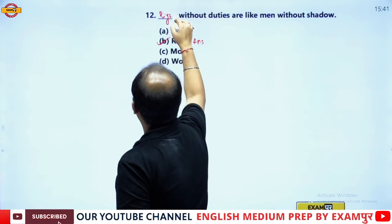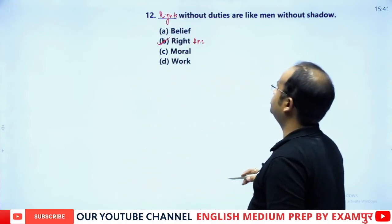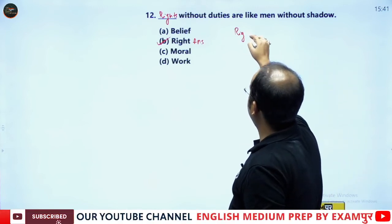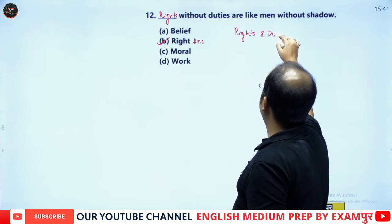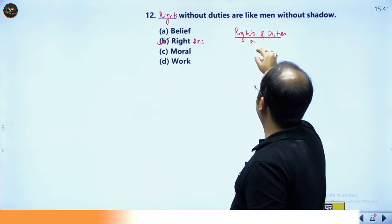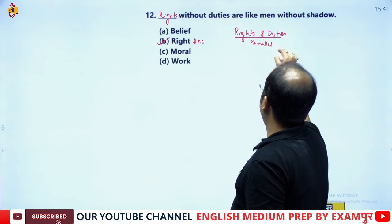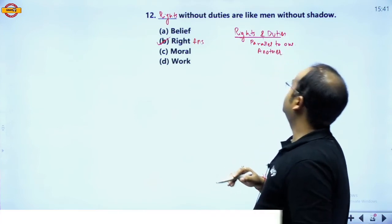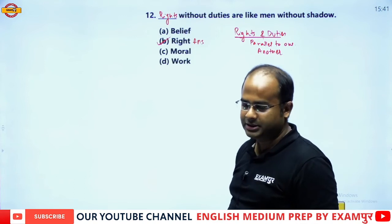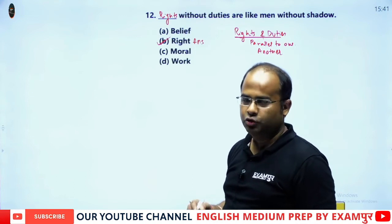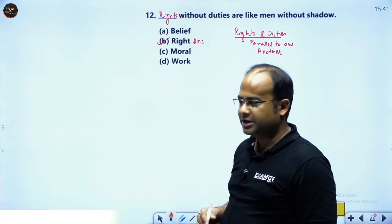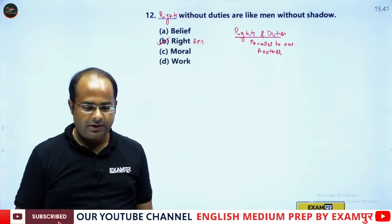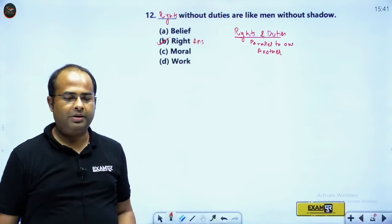Rights without duties are like men without shadow. Rights and duties are parallel to one another — if you have rights, you must have duties, and if you have duties, you must have rights as well. Therefore, the correct answer is option B, rights.